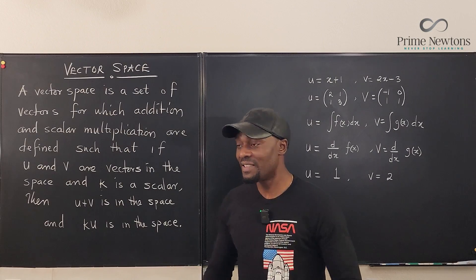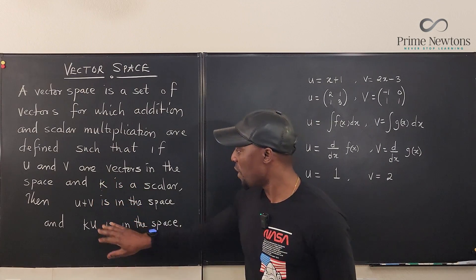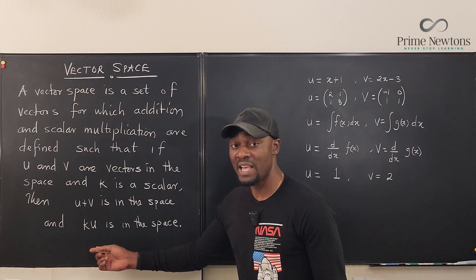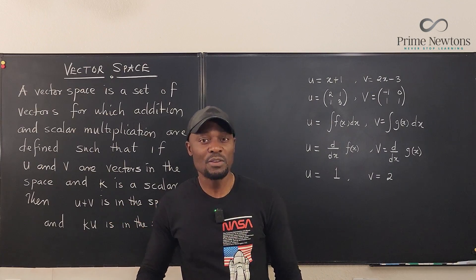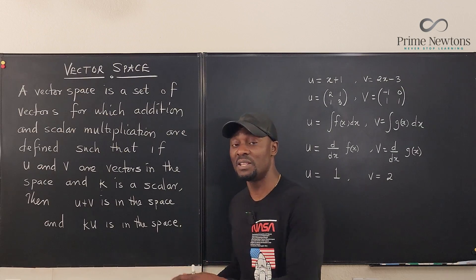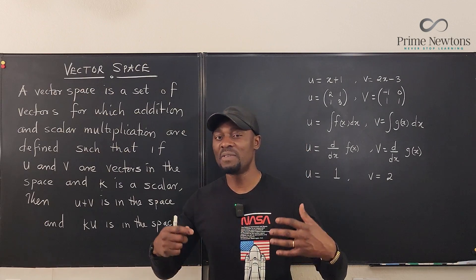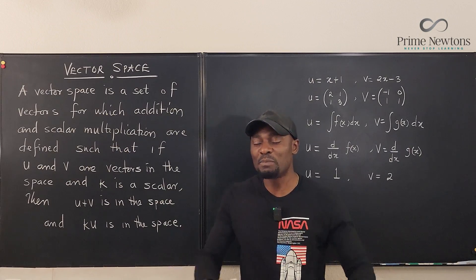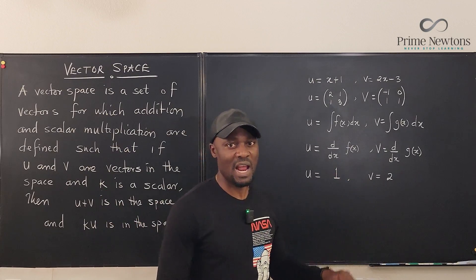However, there are other requirements: whenever you add or multiply by a scalar, the operations must have a certain behavior. Those things that define their characteristics are what you call the axioms of a vector space. Now, to explain what I've just said, let's look at the examples I have here.